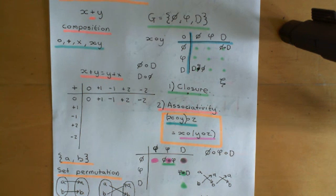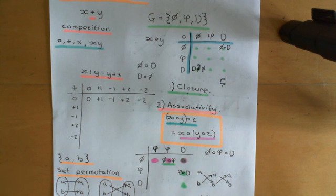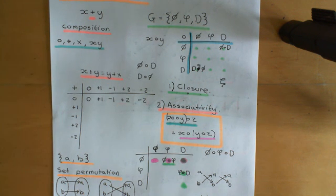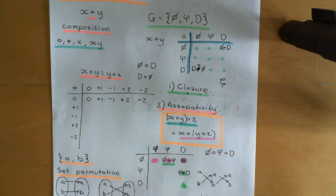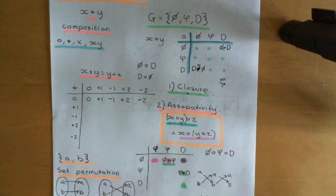That is not a trivial property at all. The way that you can actually build a composition table that does have that property is by letting the symbols within your group represent permutations of some other set. Then the composition law needs to be the composition of those set permutations to get another set permutation which should have a symbol within your group. You want the two set permutations to compose together to give a set permutation that is in your group — if it doesn't, you're not going to get closure being obeyed.